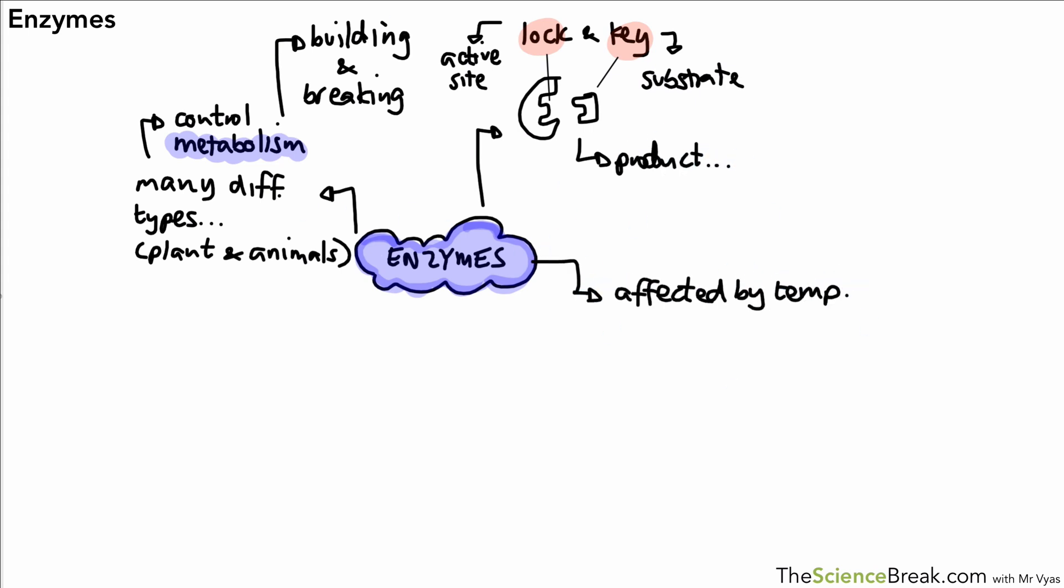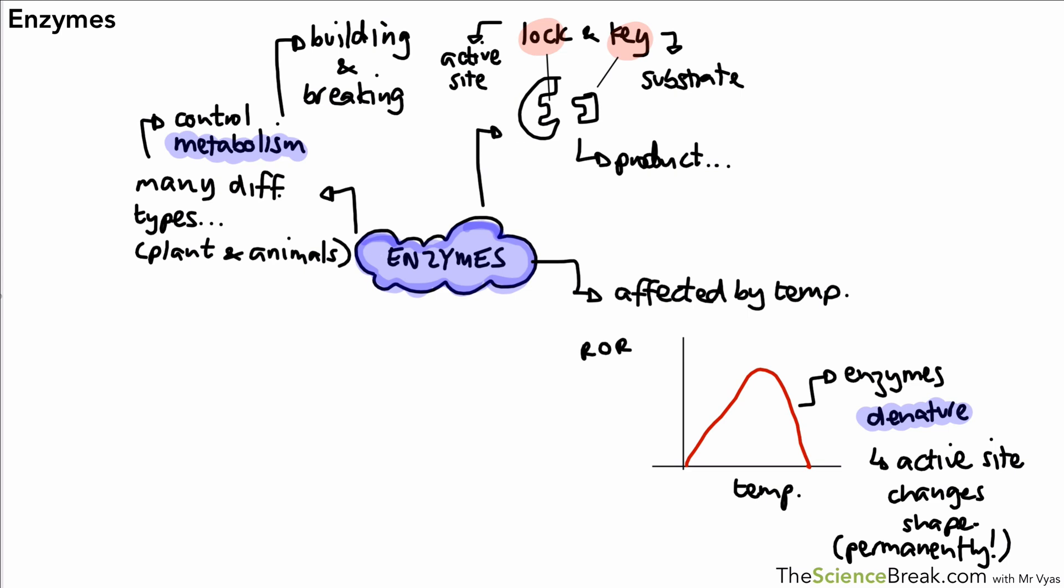We also said the enzymes are affected by temperature, and the best way to show that would be a graph that looks a bit like this. The enzyme at the back end of the graph denatures, and that means the active site has permanently changed shape. It no longer fits the substrate.